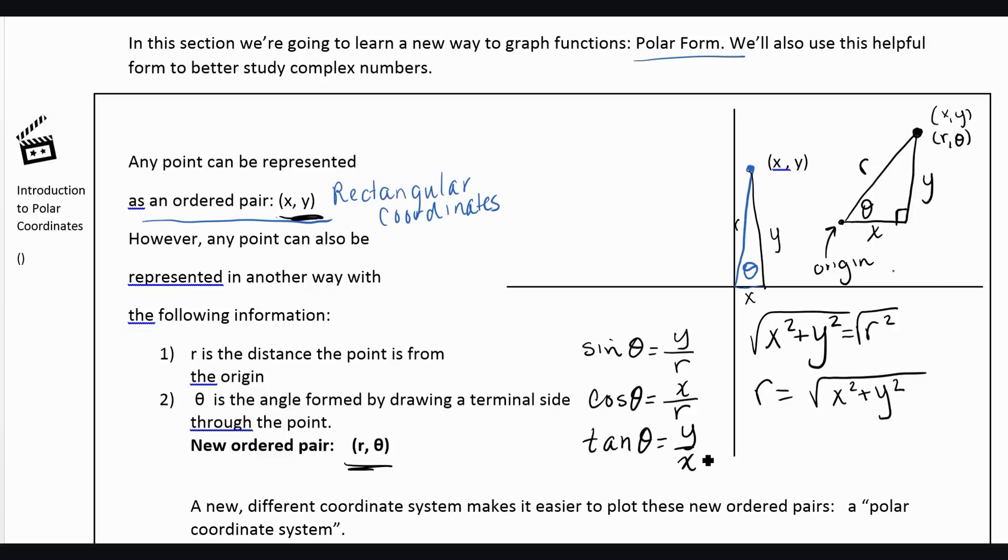Which means if we have X and Y and we want to find theta, one way we can do it is by taking tangent inverse of Y over X. That would be equal to theta. So these are the two equations that we'll use and we'll do another video where we have X and Y and we're trying to find R and theta.